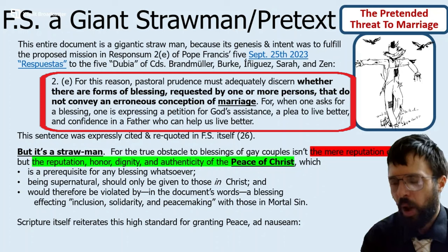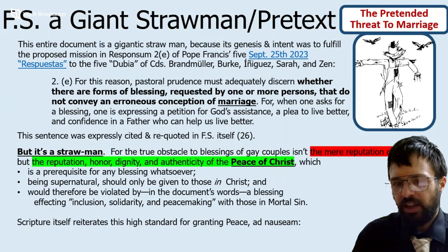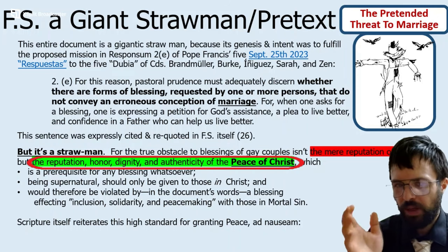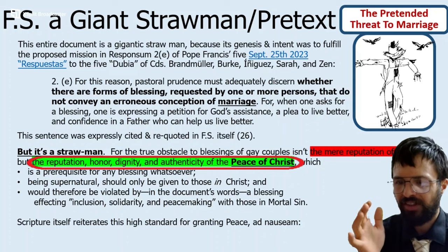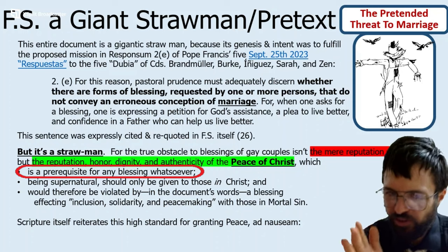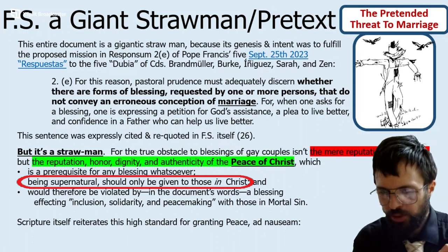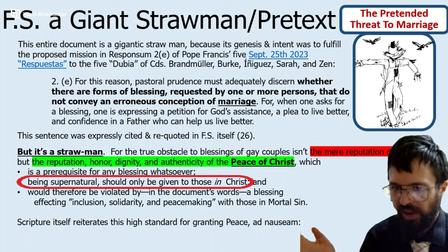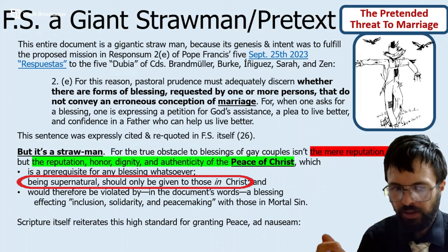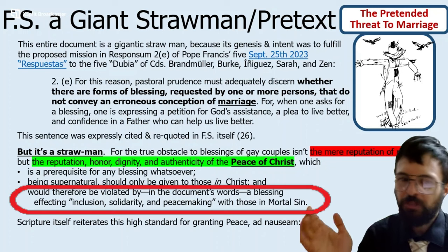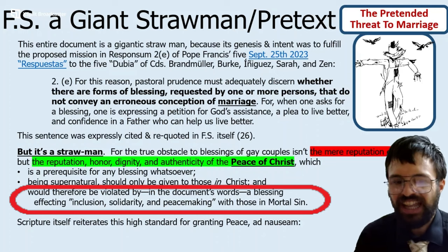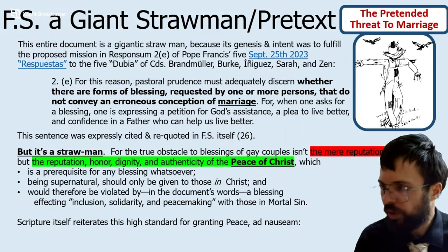Why is it a straw man? Because the mere reputation of marriage is nothing compared to the reputation, honor, dignity, and authenticity of the peace of Christ, which is a prerequisite for any blessing whatsoever — and being supernatural, should only be given to those in Christ, in the mystical body of Christ, in a state of grace, in the Holy Spirit. Therefore it would be violated by — in Fiducia Supplicans' own words — 'a blessing affecting inclusion, solidarity, and peacemaking with those in mortal sin.'